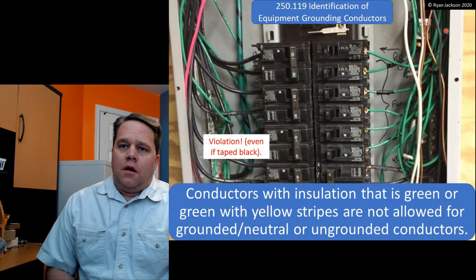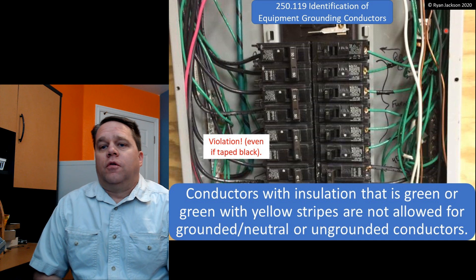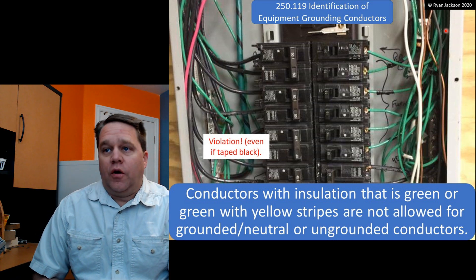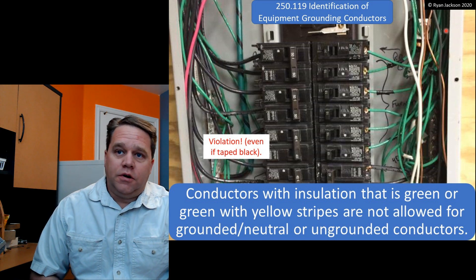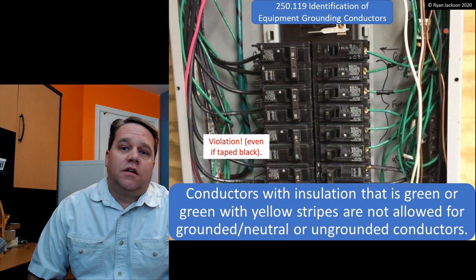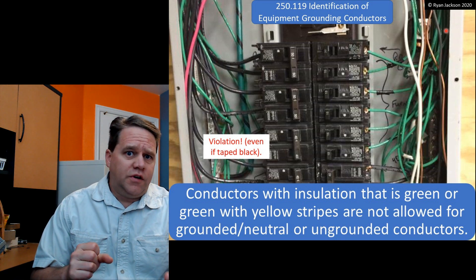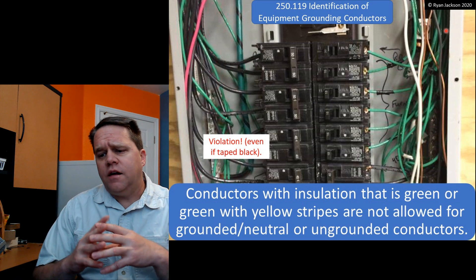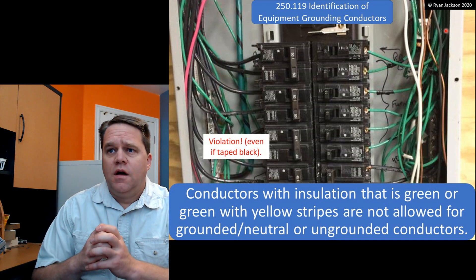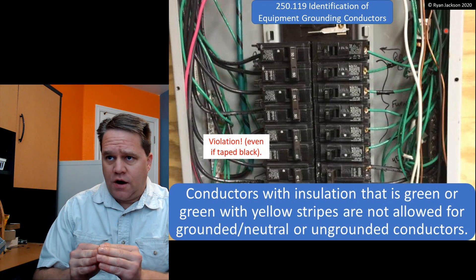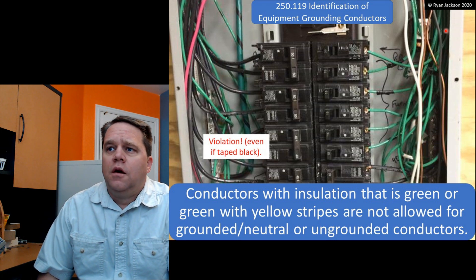Conductors with insulation that is green, green with a yellow stripe, or bare are not allowed to be used as a grounded, neutral, or ungrounded conductor. Even if you taped these conductors black, red, or blue, it would still be a violation — green is a conductor color we are not allowed to re-identify. Under 210.5(C), ungrounded conductors of any size can be re-identified, but that does not apply to green conductors. Green conductors must be used for grounding and bonding purposes only.